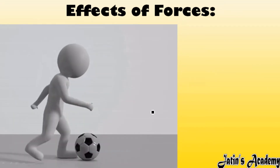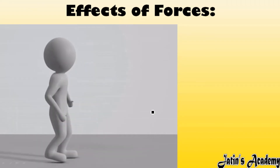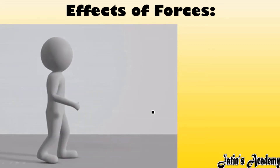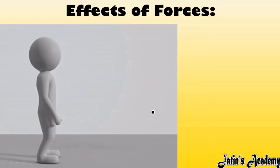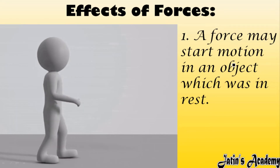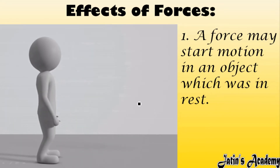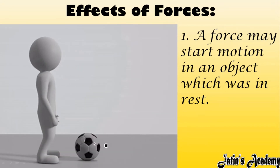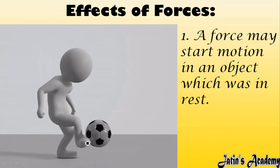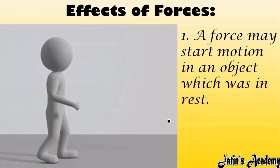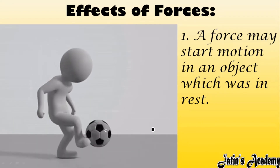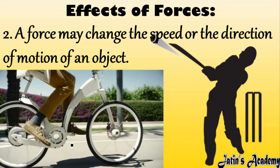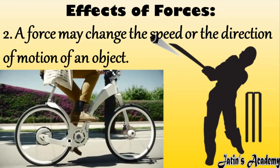Next are the effects of force. Due to applying force, many effects are seen in an object. First effect: a force may start motion in an object which is at rest. For example, a ball is initially at rest; when a boy applies force on the ball, it starts moving — changing from the state of rest to the state of motion. Second effect: a force may change the speed of an object.